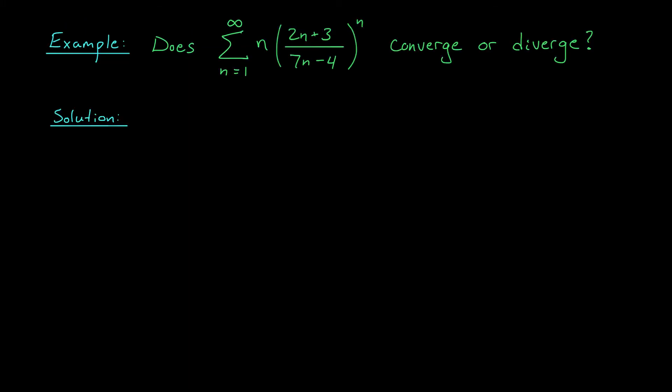Consider the following example: the sum from 1 to infinity of n·(2n+3)/(7n-4) all raised to the n. Does this series converge or diverge? Notice that here we have a function of n raised to a power that's also a function of n. This is exactly where the root test shines—f(n) to the power of g(n). So let's try the root test here.